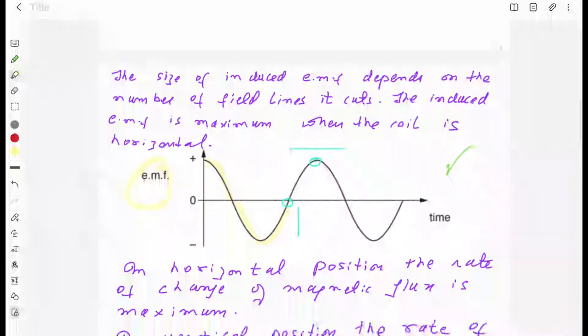The second important point is that if your coil is horizontal, it will cut the maximum field lines, and the value of EMF is maximum. This is the horizontal position.